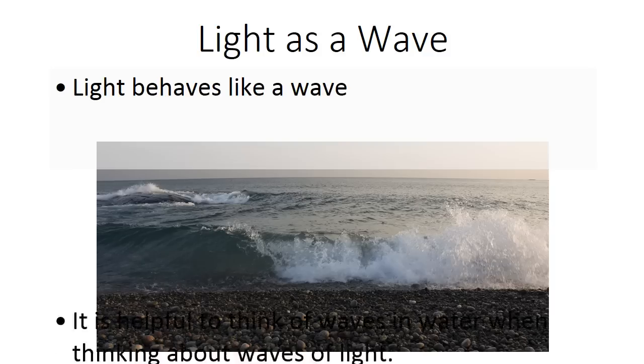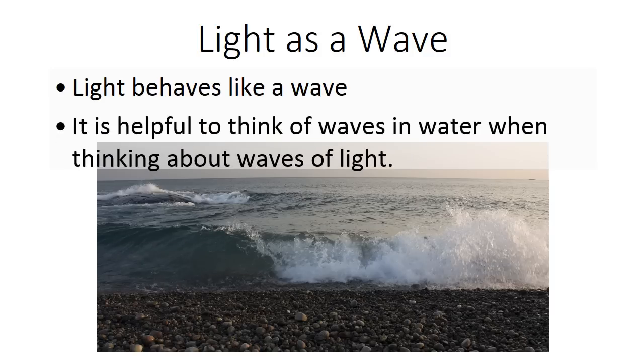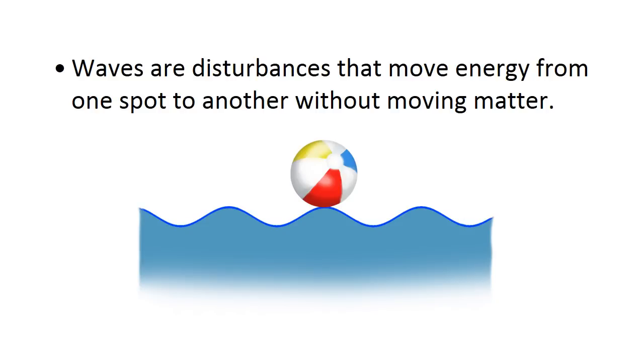So light behaves like a wave. It's very helpful to think of waves in water when we think about waves of light, because in many ways they behave fairly similarly. So we should talk about what a wave is. Waves are disturbances that move energy from one spot to another without moving matter. When you look out on a lake and you see a ball bobbing around in the water, if you have waves, those waves won't necessarily move that ball anywhere. The ball might just bob up and down in one spot if there's no wind blowing it around.